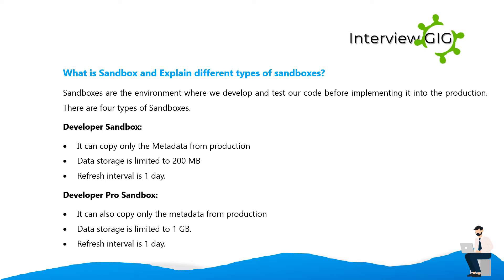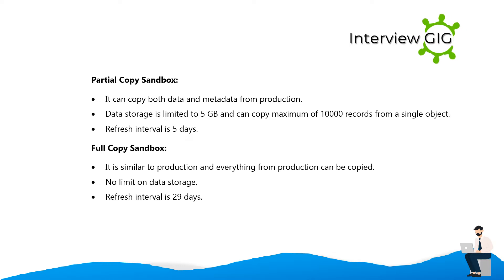What is a sandbox and what are the different types? Sandboxes are environments where we develop and test our code before implementing it into production. There are four types: Developer Sandbox — copies only metadata from production, storage limited to 200 MB, refresh interval one day. Developer Pro Sandbox — copies only metadata, storage limited to 1 GB, refresh interval one day. Partial Copy Sandbox — copies both data and metadata, storage limited to 5 GB, maximum 10,000 records from a single object, refresh interval five days. Full Copy Sandbox — similar to production, no limits on data storage, refresh interval 29 days.